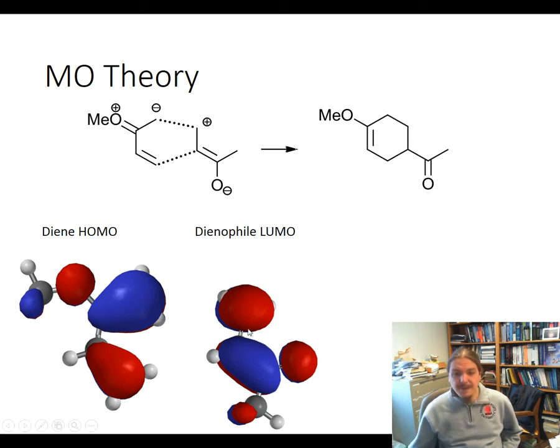But again, of the two dienophile carbons, one has a little bit bigger orbital lobe than the other. And so from the molecular orbital standpoint, you line up the larger lobe with the larger lobe because you're going to get more constructive orbital overlap when that happens.